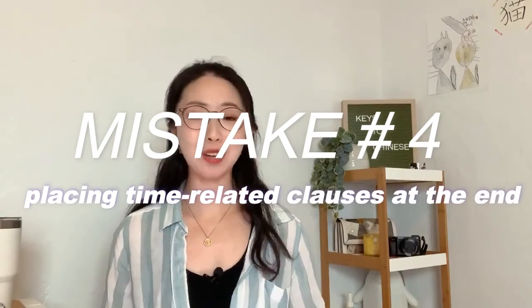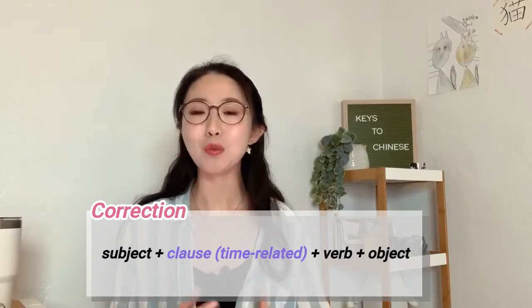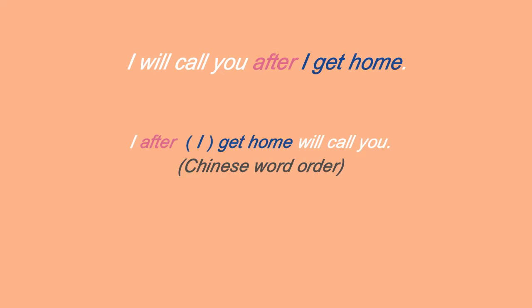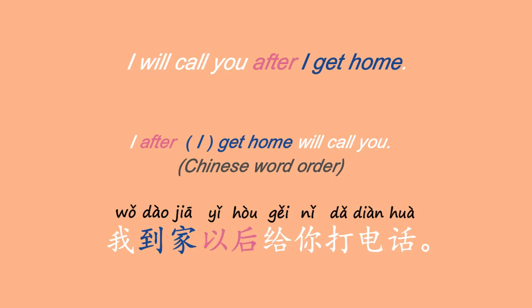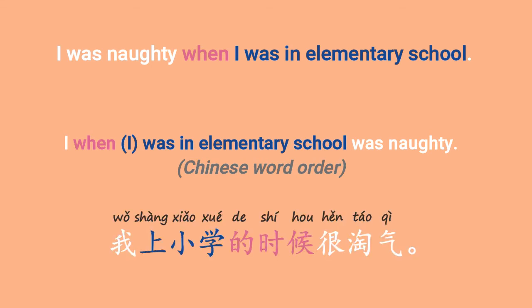Mistake number four: placing time-related clauses at the end of the sentence. These clauses are connected by 'before,' 'after,' and 'when,' and are treated as time terms placed after the subject. For example, 'I will call you after I get home' becomes 'I after I get home will call you': 我到家以后给你打电话. Another example: 'I was naughty when I was in elementary school' becomes 我上小学的时候很淘气.